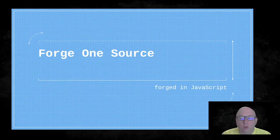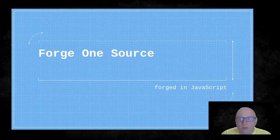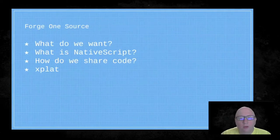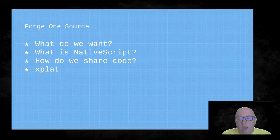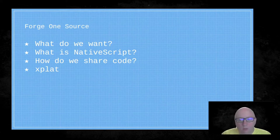We're going to forge one source, and that's going to be forged in JavaScript. You might notice some veiled references to a certain movie involving hobbits, a dwarf, and an elf. Today we're going to talk about what we want, what NativeScript is — the key to our end goal of one source — how we share code, and then look explicitly at Xplat, which is one of the solutions for sharing code.